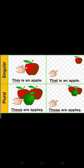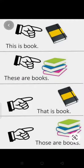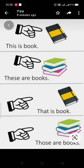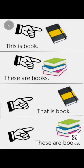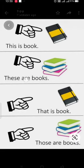Come, let us see once again with some more examples. This book is near to the hand, so we say 'this is a book.' And see, here are many books near, so we say 'these are books.' When only one book is there, we use 'is.' When there are many books nearby, we use 'these are.' Now, this book is far away from the hand, so we say 'that is a book.' But if there are so many books far away, we say 'those are books.'